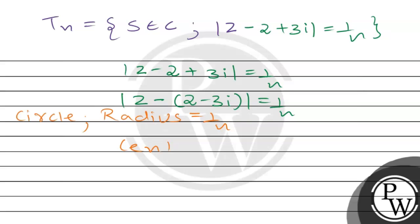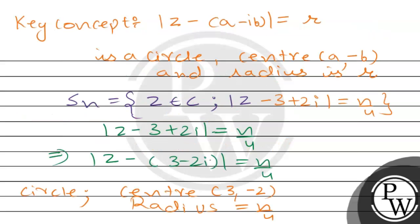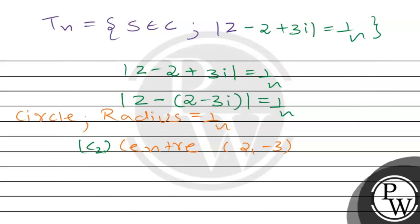The center of T_n's circle is at (2, -3) and the center of S_n's circle (C1) is at (3, -2). Now we need to find when S_n and T_n have an intersection.